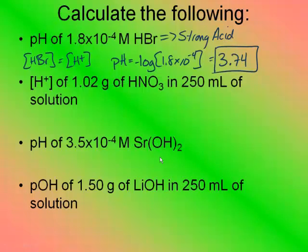Now it wants me to find the H plus of 1.02 grams of HNO3 in 250 milliliters of solution. I actually have to determine the molarity. This is a strong acid, it's one of my seven strong. So when I find the molarity of this acid, that will be the molarity of my H+. That's all they're really asking for in this problem. So let's do a mole conversion.